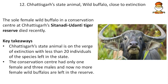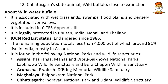Next, Chhattisgarh's state animal, the wild buffalo, has come close to extinction. The sole female wild buffalo in a conservation center at Chhattisgarh's Udanti-Sitanadi Tiger Reserve recently died. Chhattisgarh's state animal is now on the verge of extinction with fewer than 20 individuals left in the state. The conservation center had only one female and three males, and now no female wild buffaloes remain in the reserve.